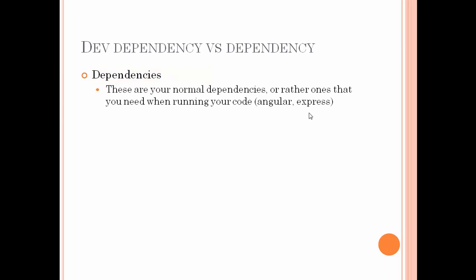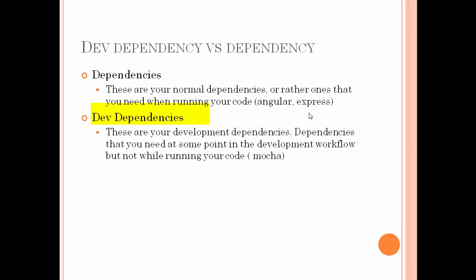Basically, dev dependencies — you also call them production dependencies — these dependencies are required for running your code, like Express or Angular. Whereas dev dependencies, as the name suggests, these dependencies are used during your development workflow, like when you need to run your test cases you require Mocha, or you want to build and automate your work using Grunt or Gulp as a task runner. These dependencies are not required when you are going to push the code into the production environment.